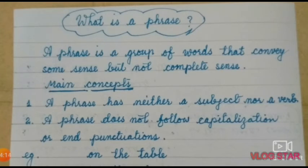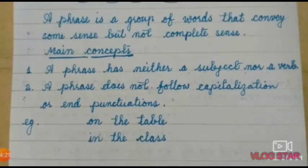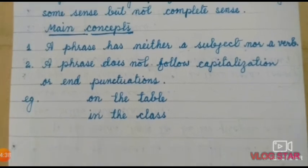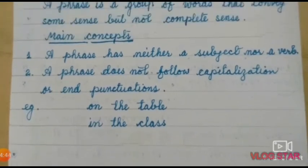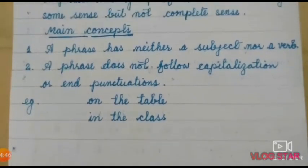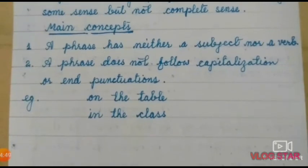Iska main concepts is prakar hai. A phrase has neither a subject nor a verb. Vakyaansh ke andar na koi subject hai, nahi koi verb hai. Subject ka matlab karta, verb ka matlab kriya — yani phrase ke andar nahi koi karta hai, nahi koi kriya hai. A phrase does not follow capitalization or end with a full stop. Sentence ki tarah, phrase ka shuruwaat kisi capital letter se ya iski end mein full stop nahi lagta hai.